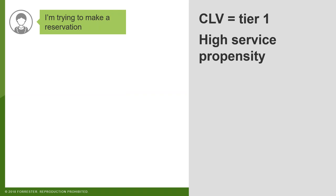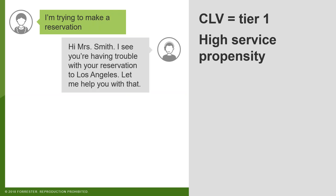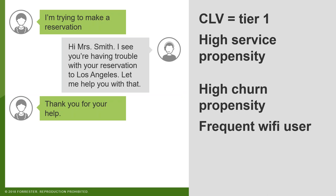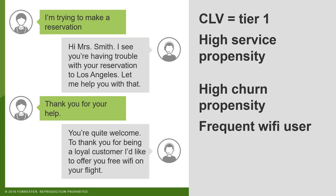Let's look at a differentiated service interaction based on lifetime value analysis. This customer is a tier-one CLV and has a high service propensity. Mrs. Smith goes on to her airline and says she's trying to make a reservation. The customer service rep determines she's in the highest tier of lifetime value. The agent says, 'Hi Mrs. Smith, I see you're having trouble with your reservation to Los Angeles — let me help you with that.' They fixed the problem, and because Mrs. Smith has a high churn propensity and frequently uses Wi-Fi on flights, they offer her free Wi-Fi as an incentive to stay.